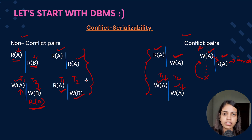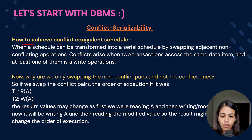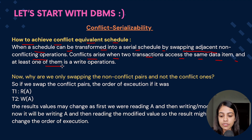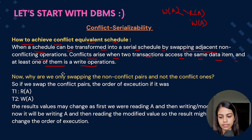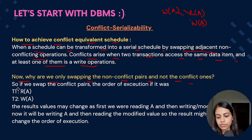These are non-conflict pairs because if we are performing these operations there is no inconsistency issue in our database. A conflict arises when two transactions access the same data item and at least one of them is a write operation. Whenever one of them is a write operation and there is another operation performed on the same data item, we can say there is a conflict arising.